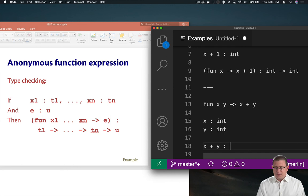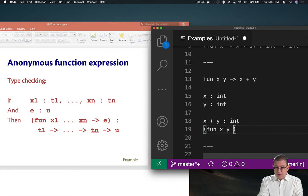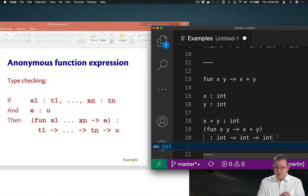And if the body expression x plus y has a type, what type would that have to be? It would have to be int, again, because of the plus operator there. Then the entire anonymous function expression would have the type int arrow int arrow int. We figured that out by postulating what the argument types must be, figuring out what the body type was, and using those together to form the type of the anonymous function expression.